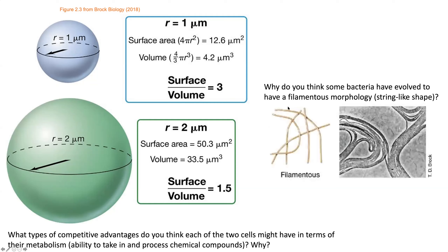Filamentous bacteria have a string-like shape and tend to survive well in environments where nutrients are scarce. When other microbial groups are starved out, filamentous bacteria tend to dominate. This is because they combine both advantages: a small volume that allows efficient transport of nutrients to the cell center, and a very large surface area that allows access to a larger amount of space to bring in chemical compounds and nutrients.